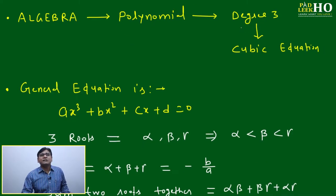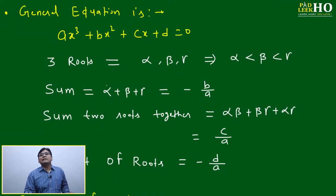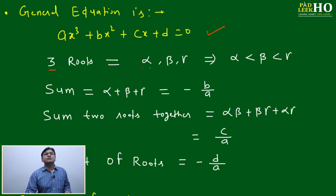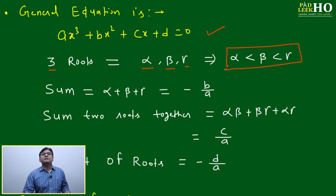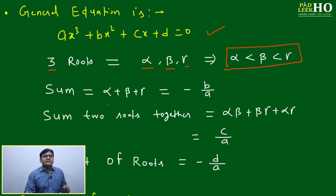Algebra includes polynomial as one chapter, and the cubic equation is a polynomial of degree three. The general cubic equation is: ax³ + bx² + cx + d = 0. This will have three roots — that is 100% certain. Let's call them alpha, beta, and gamma in increasing order, so alpha < beta < gamma. On the number line, from left to right, we can represent them in increasing order.